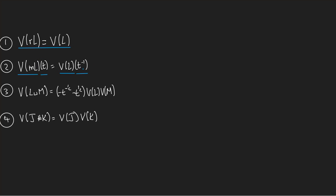Result number three says the Jones polynomial of the distant union of two links - the distant union being where you take two oriented links, place them in R³ far apart so they can be separated by a plane, and take their union - the Jones polynomial of this distant union is the product of the two Jones polynomials times the factor (−T^(−1/2) − T^(1/2)). The final result is that if J and K are oriented knots, then the Jones polynomial of their sum is the product of the Jones polynomials.